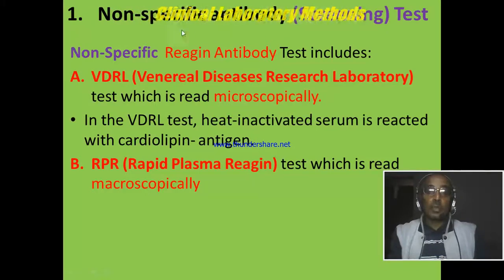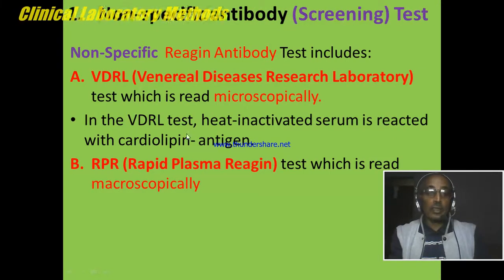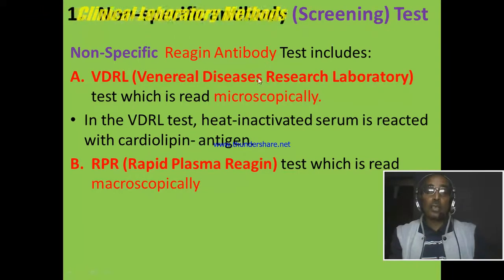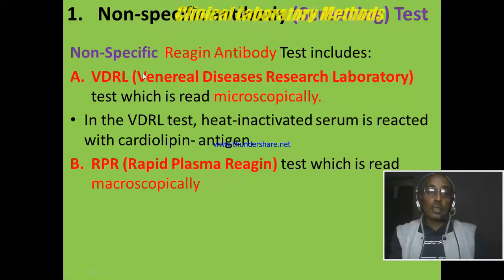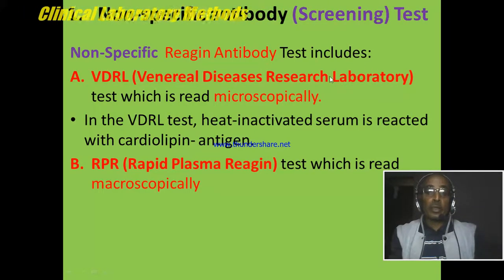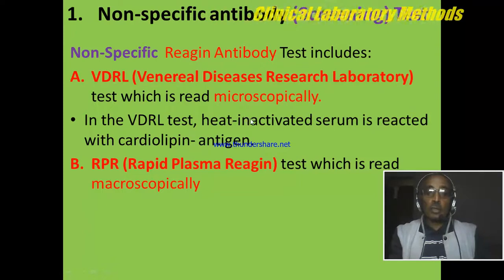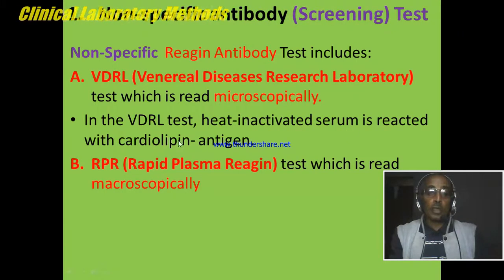Non-specific antibody or reagin can be detected by VDRL and RPR techniques, and these tests are screening tests — they are not confirmatory tests, because these techniques detect the reagin antibody. VDRL is a Venereal Disease Research Laboratory test, and the antigen-antibody reaction can be examined microscopically. It requires heat-inactivated serum to react with the antigen.